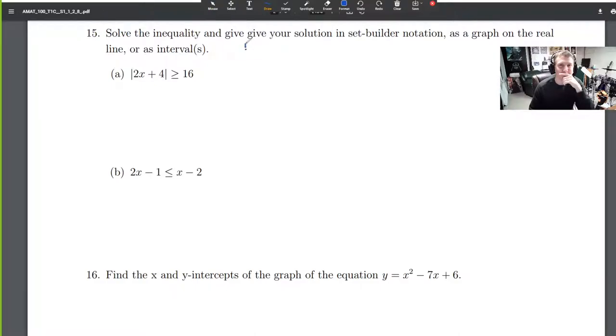So we'll just mark that as questionable. For part a, it's the absolute value of 2x + 4 is greater than or equal to 16.